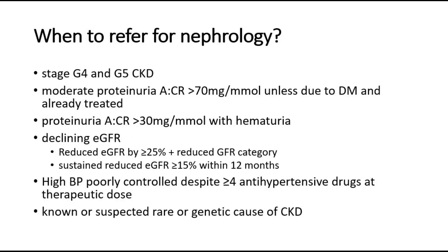When do we have to refer the patient to the nephrology unit? The indications are: first, stage G4 or G5 CKD; second, proteinuria where the albumin-creatinine ratio is more than 70, unless it is due to diabetes and already treated; third, proteinuria with hematuria; fourth, declining eGFR; fifth, poorly controlled hypertension despite already giving at least four antihypertensive drugs; and lastly, a known or suspected rare or genetic cause of CKD.